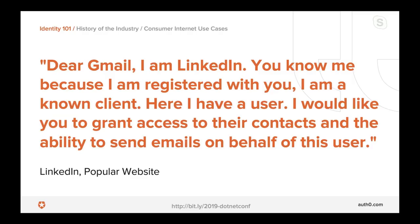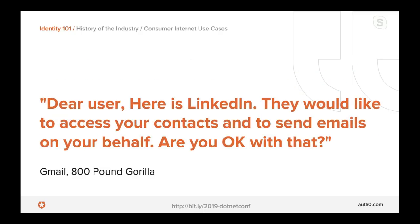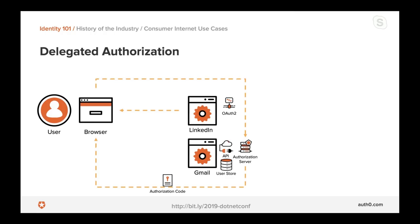The request to Gmail's authorization server effectively says: 'Dear Gmail, I'm LinkedIn, you know me because I'm registered with you as a known client. I have a user and I would like you to grant access to their contacts and the ability to send emails on their behalf.' At this point the browser is pointed at Gmail, which will authenticate the session. This authentication is happening in the proper way — I'm sending my Gmail credentials to Gmail. Once validated, Gmail examines the request and prompts me: 'LinkedIn would like to access your contacts and send emails on your behalf — are you okay with that?'